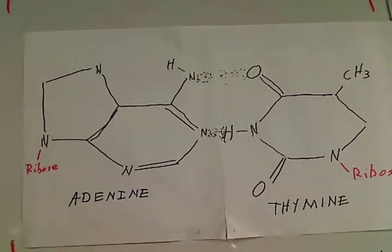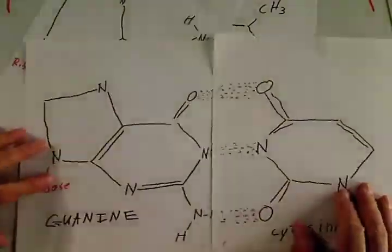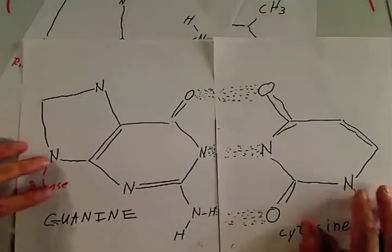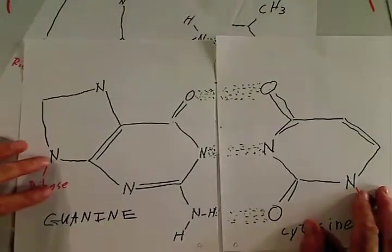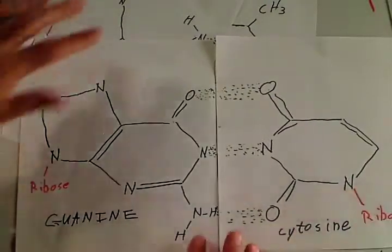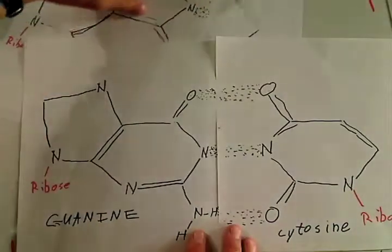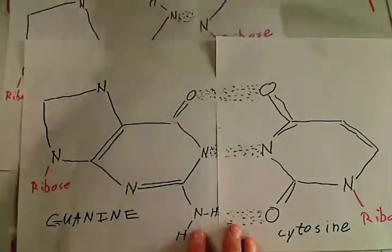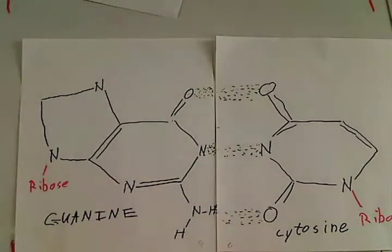Guanine and cytosine form a similar relationship — notice how guanine and cytosine have three hydrogen bonds, whereas adenine and thymine only have two.